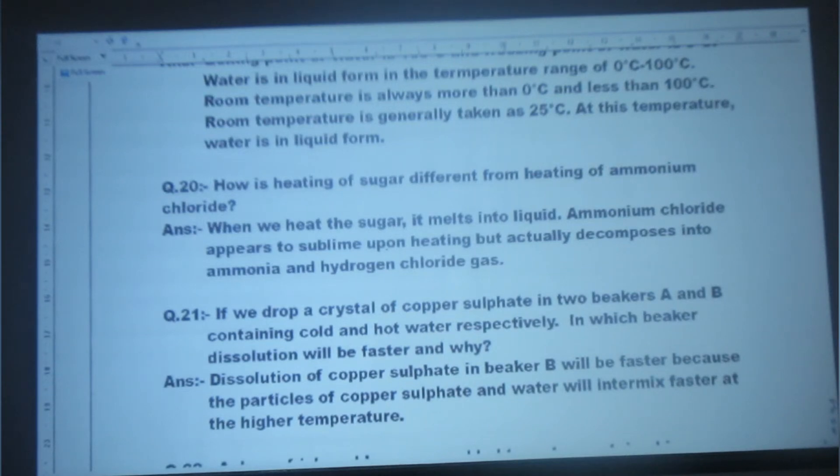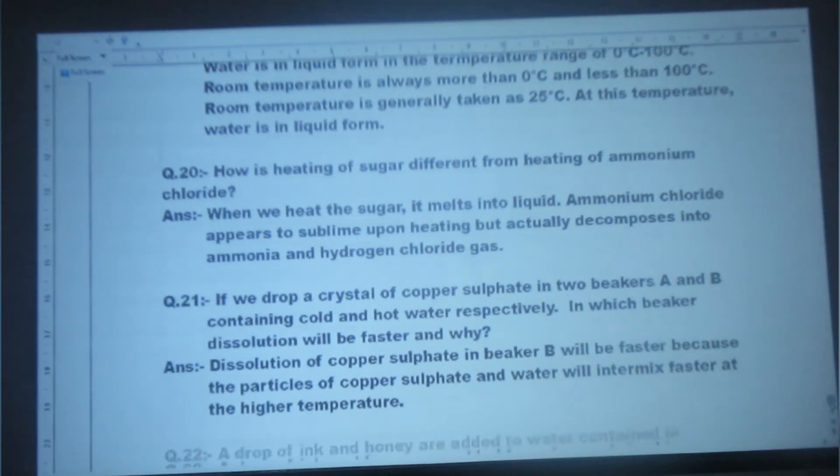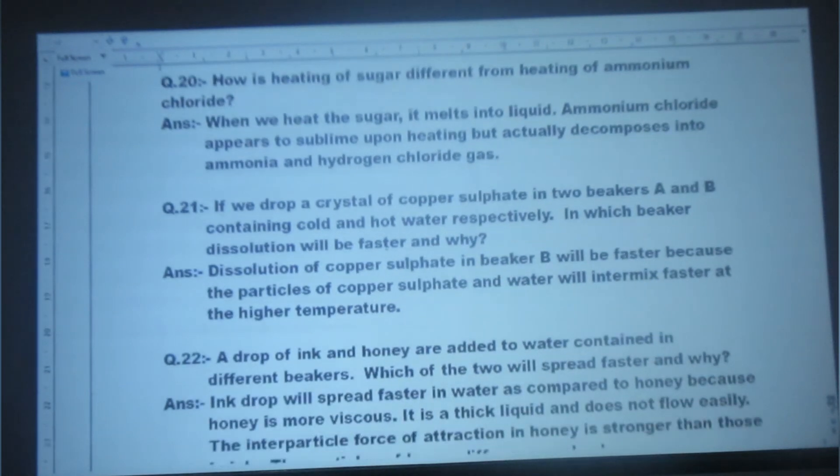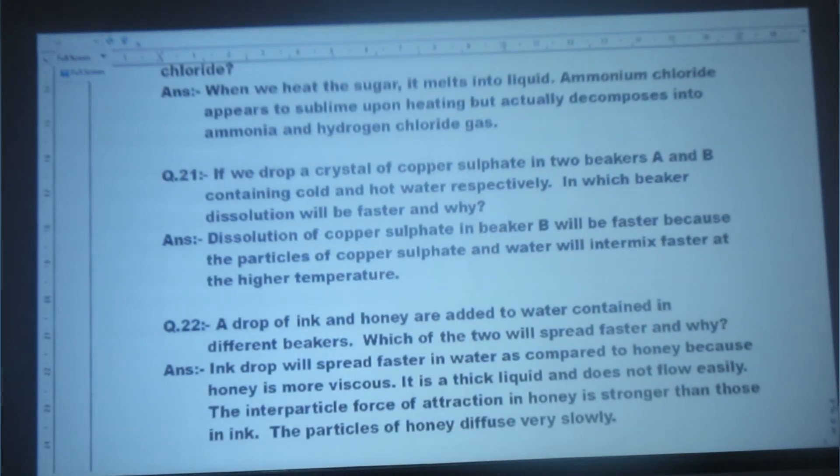Question 21: If we drop a crystal of copper sulfate in two beakers A and B containing cold and hot water respectively, in which beaker the solution will be faster and why? Answer: The solution of copper sulfate in beaker B will be faster because the particles of copper sulfate and water will intermix faster at the high temperature. In the beaker with hot water, copper sulfate will dissolve quickly because at higher temperature, copper sulfate and water particles intermix rapidly.